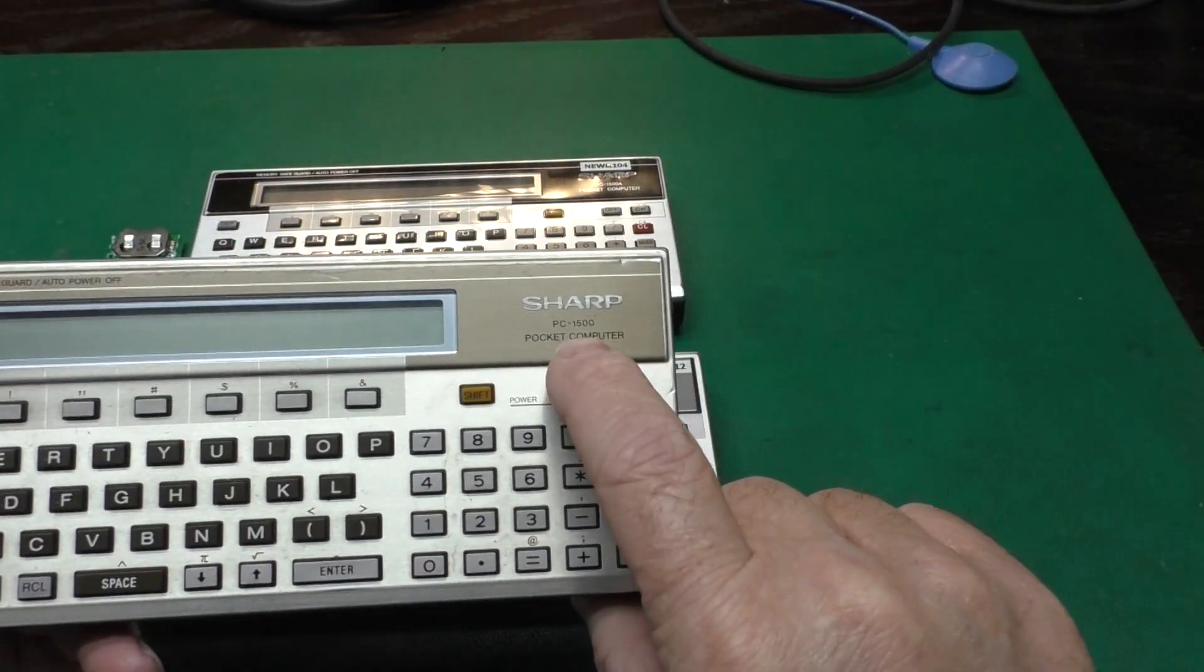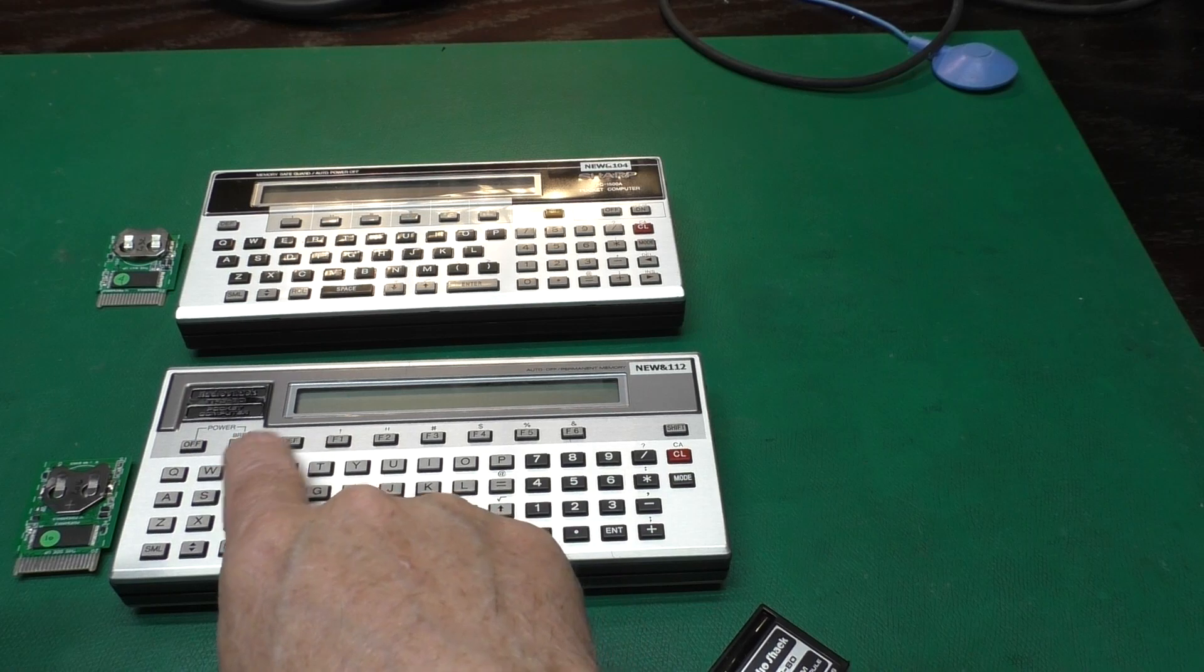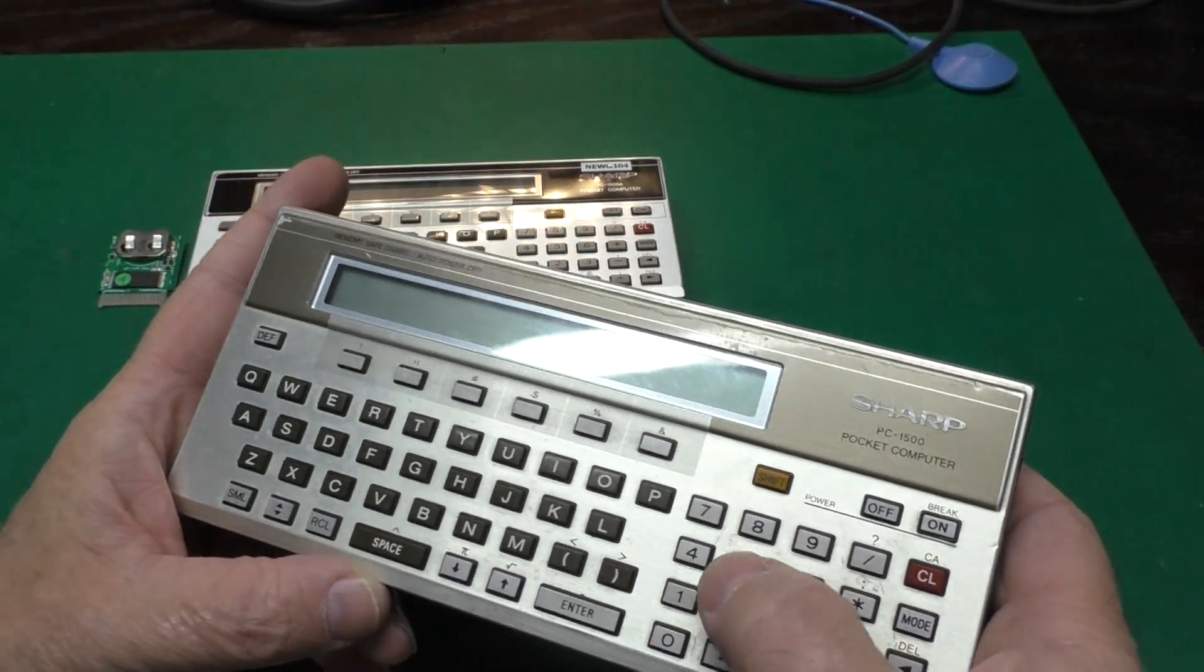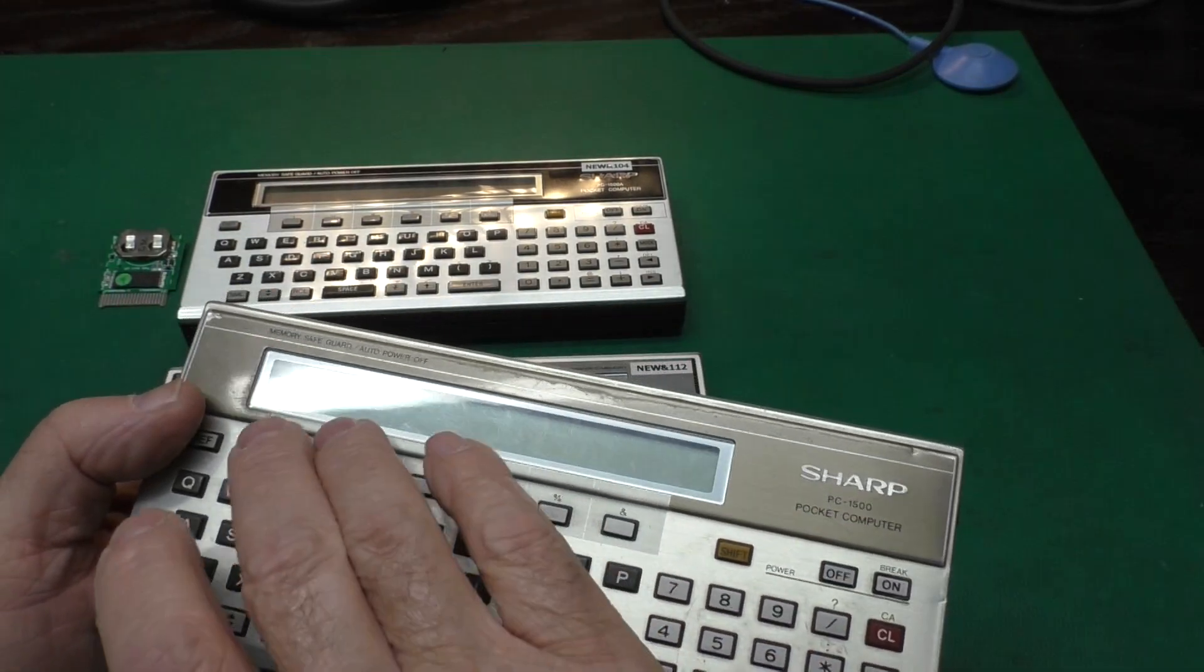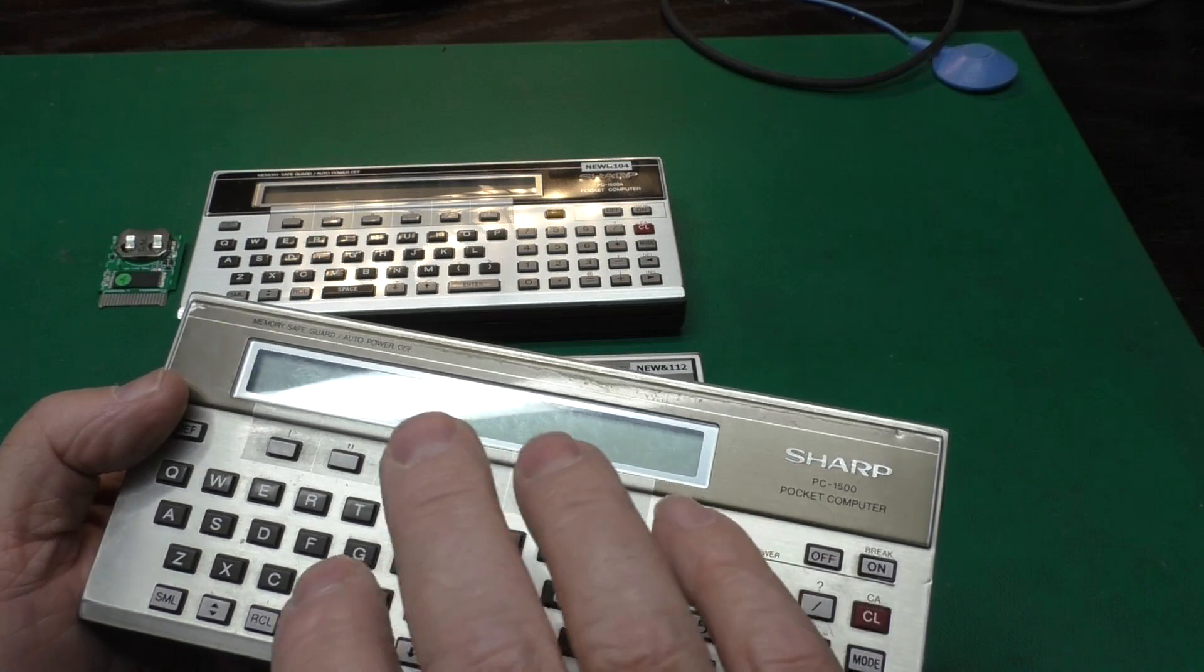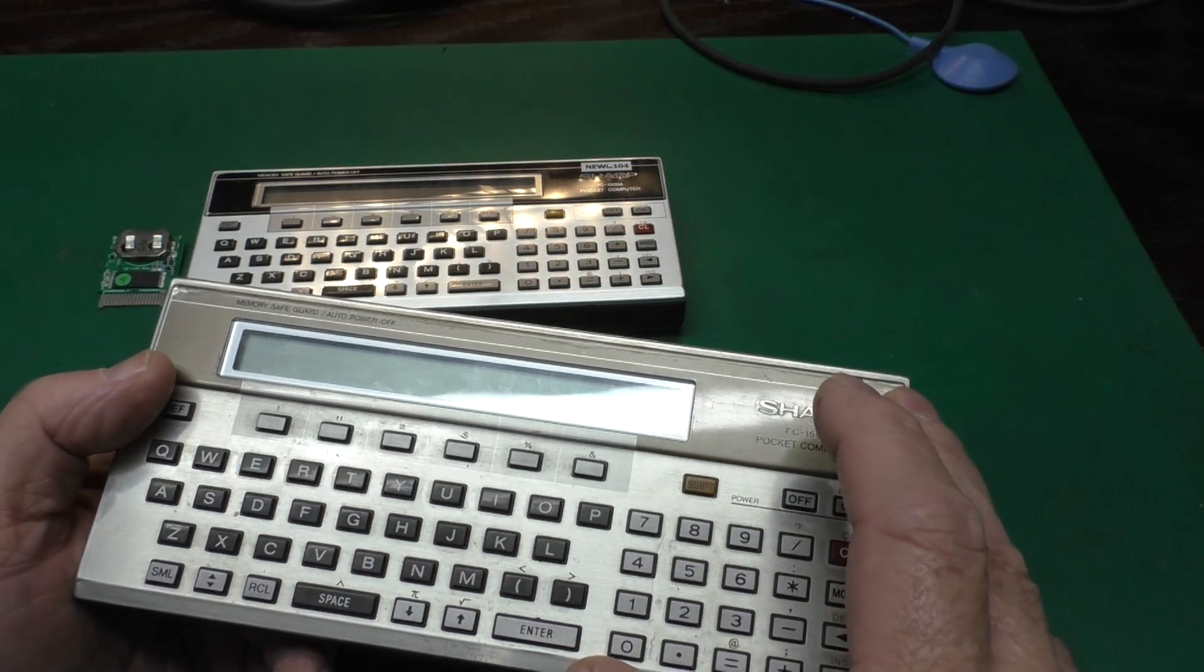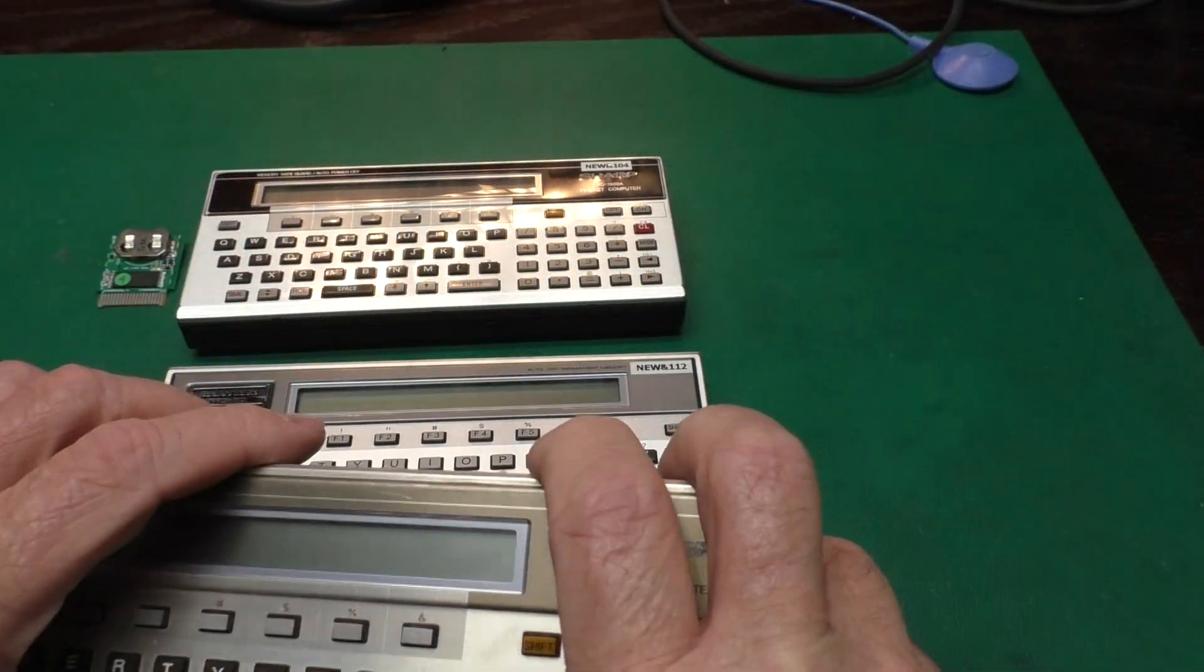When Sharp first released the PC-1500 and it was rebadged as the RadioShack PC2, this had about 2k of user accessible RAM. Part of that was actually in the LCD controller chips and it was used for the fixed variable RAM and the other was about 1.5k of RAM that was a static RAM that was installed in here.